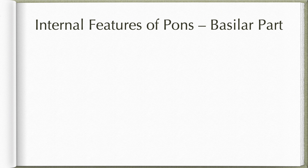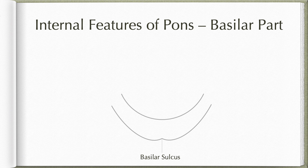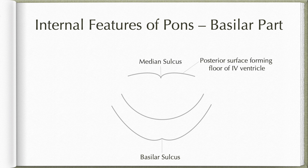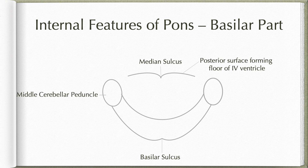Please practice drawing this diagram. Along the midline on the ventral aspect, we see a shallow depression known as basilar sulcus, along which the basilar artery is located. The posterior surface of the pons forms the upper half of the floor of the fourth ventricle, with the median sulcus along the midline. The lateral aspect of the pons has a large bundle of fibers known as middle cerebellar peduncles, and the dorsolateral corners in the lower part are occupied by the inferior cerebellar peduncles as they ascend from the medulla to reach the cerebellum.